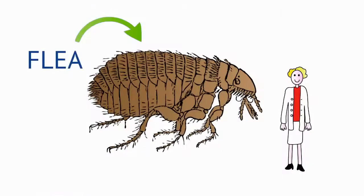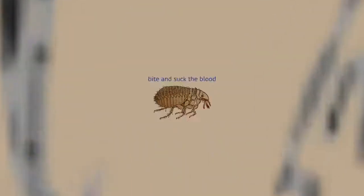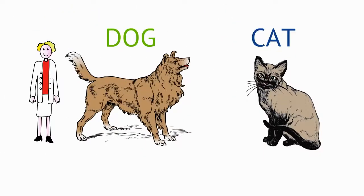Fleas are an excellent example of a parasite. They live on the fur of an animal such as a dog or a cat and they bite and suck the blood while the animal is still alive, feeding itself and harming the dog or cat at the same time.